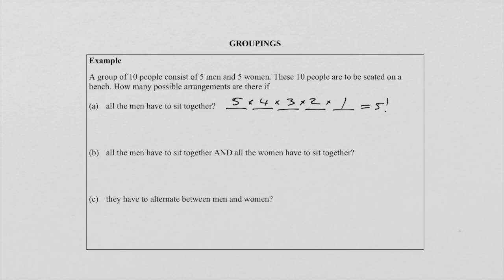Once we've arranged the males, those five men form a group that can be arranged 5 factorial ways. Now we need to bring the five women back. When the females join, they can sit anywhere — but they can't sit between the males. They can sit on either side: two on one side, three on the other. That order doesn't matter. So this group of five males counts as one unit.